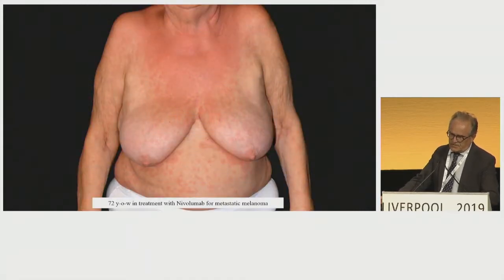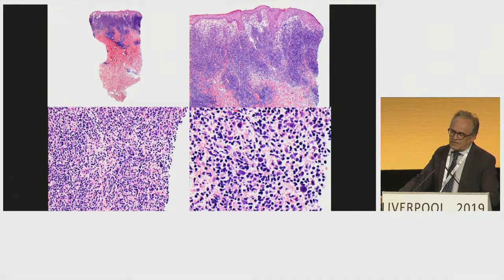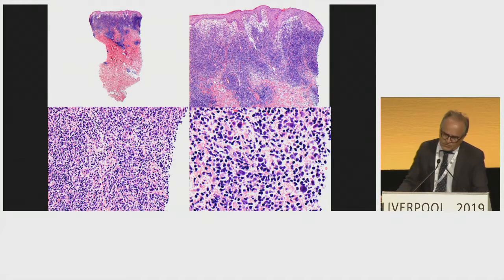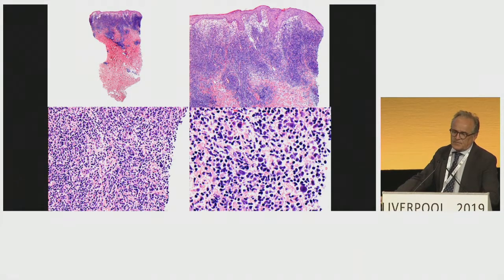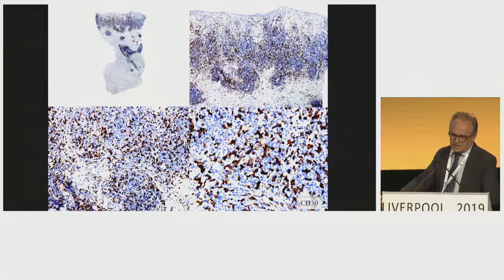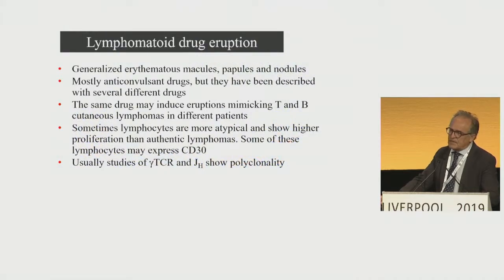We have a recent case — this woman was under treatment with nivolumab, a new treatment for metastatic melanoma. After three weeks of treatment, she developed a widespread, symmetrical drug eruption. The biopsy shows a very dense band-like infiltrate involving the upper half of the dermis, with many atypical large and pleomorphic cells. The stain for CD30 demonstrates that these large cells are positive. This is a drug reaction mimicking mycosis fungoides or anaplastic large cell lymphoma, which is completely benign — when you stop the drug, the lesions resolve. Lymphomatoid drug reaction is a very well-described entity.